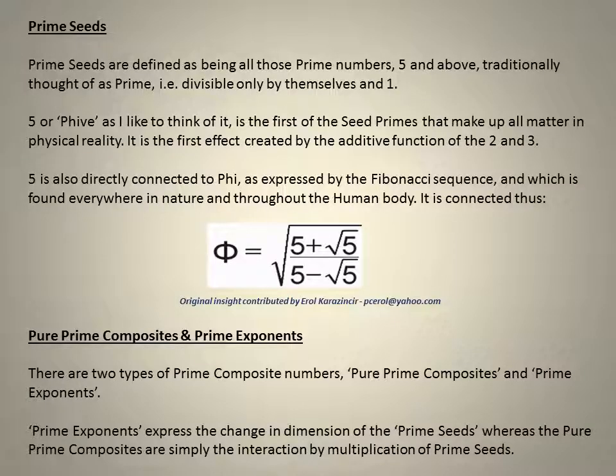Prime seeds. Prime seeds are defined as being all those prime numbers 5 and above traditionally thought of as prime, i.e. divisible only by themselves and 1. 5 or Phi as I like to think of it is the first of the seed primes. It is the first effect created by the additive function of the 2 and 3. It is also directly connected to Phi as expressed by the Fibonacci sequence and which is found everywhere in nature and throughout the human body.